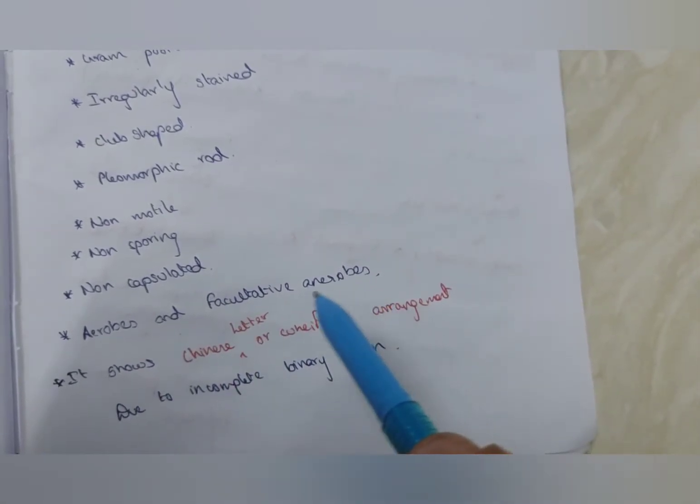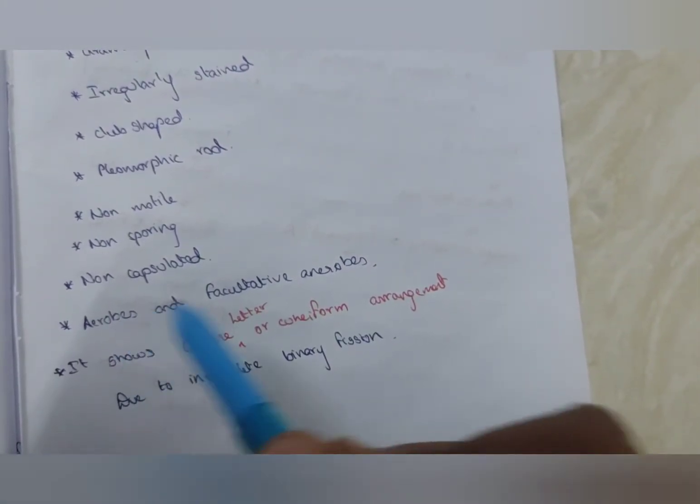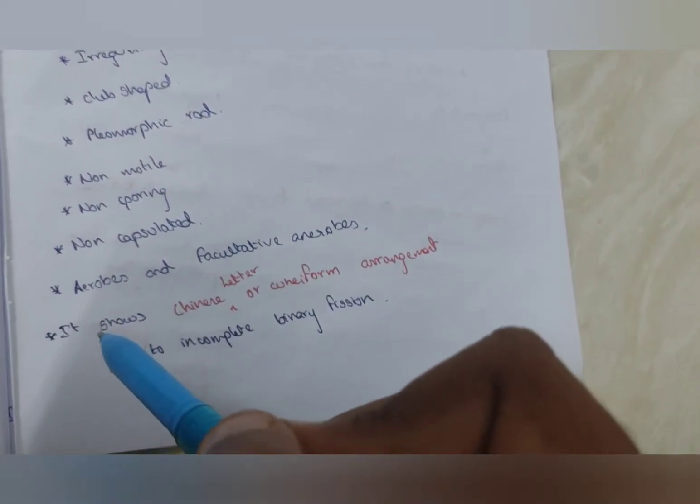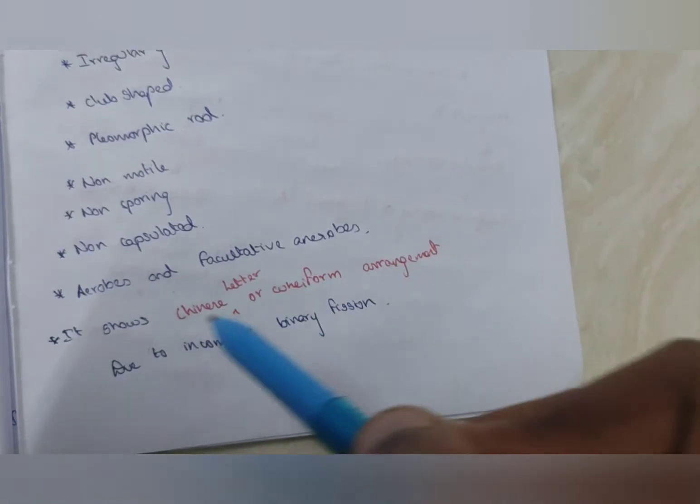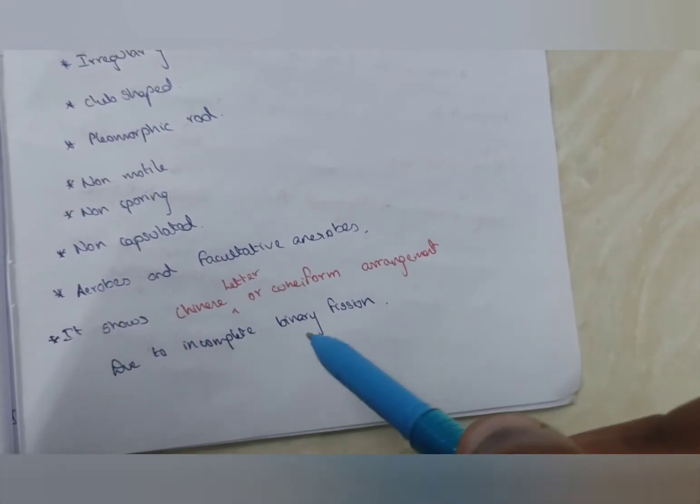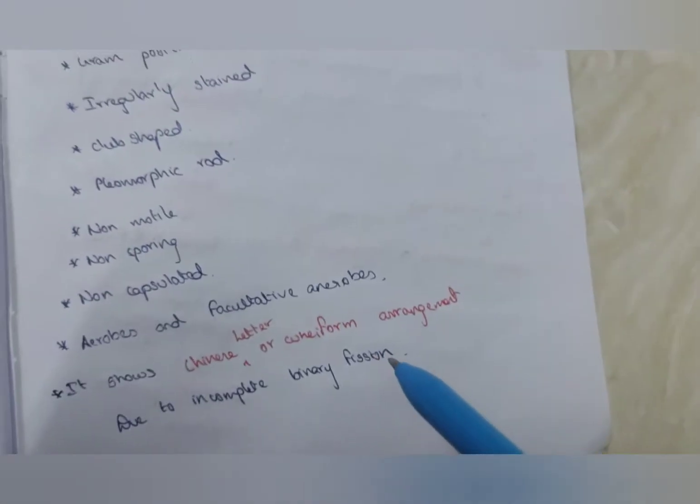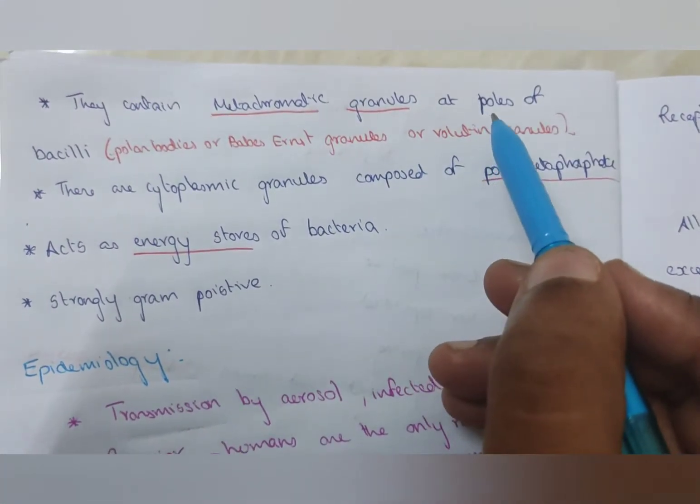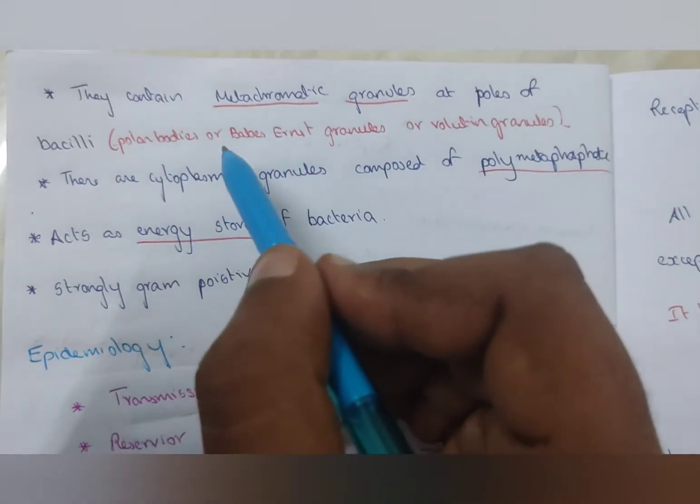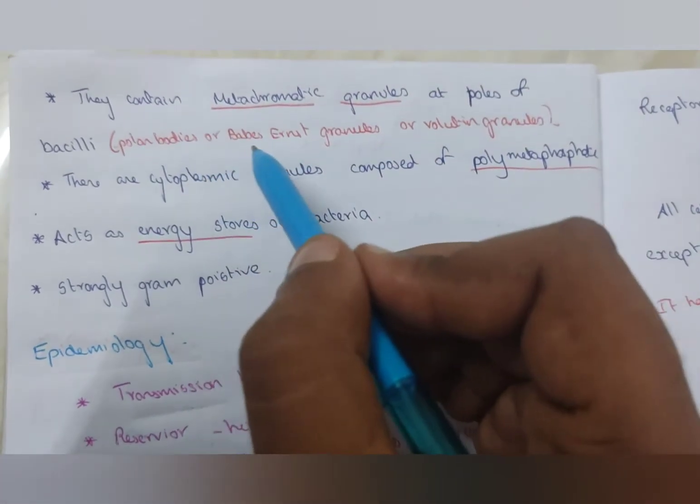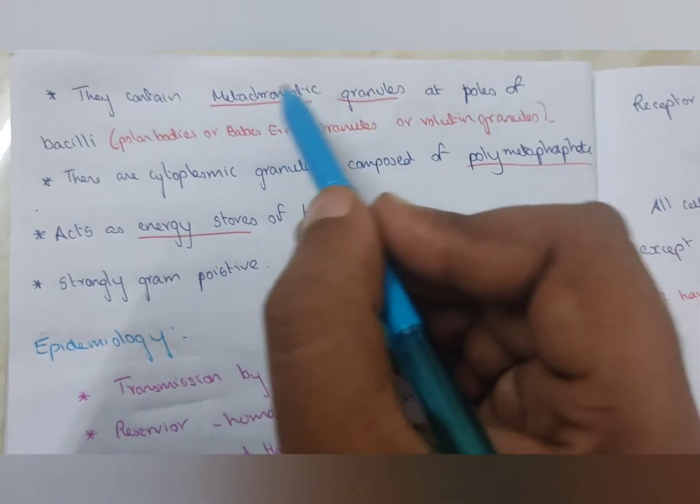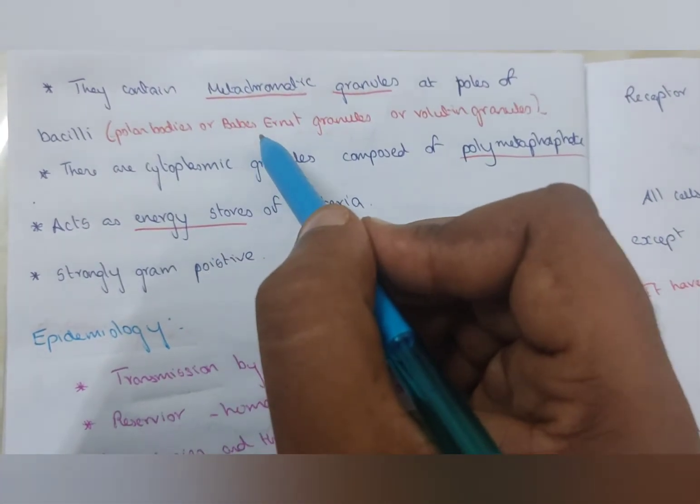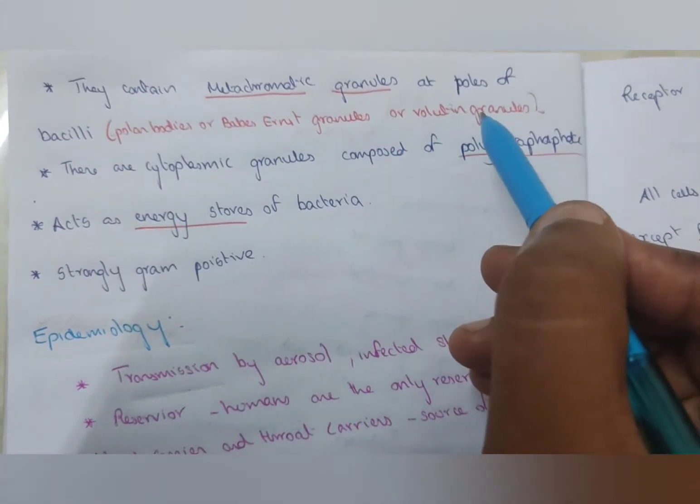They live in both oxygen and without oxygen. It shows Chinese letter and cuneiform arrangement due to incomplete binary fission. They contain metachromatic granules at the pole of the bacilli. The metachromatic granules are otherwise known as polar bodies, Babes-Ernst granules, or volutin granules.